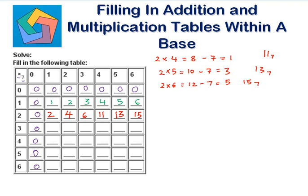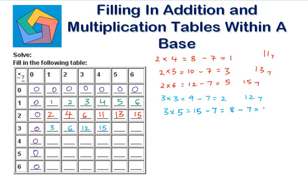Now with 3: 3 times 1 is 3. 3 times 2 is 6. 3 times 3 is 9. 9 minus 7 is 2, so this is 12 to the base 7. 3 times 4 is 12, and 12 in base 7 is 15. 3 times 5 is 15. 15 minus 7 is 8, and 8 minus 7 is 1, so this is 21 to the base 7, since we subtract 7 two times and 2 becomes the carryover.